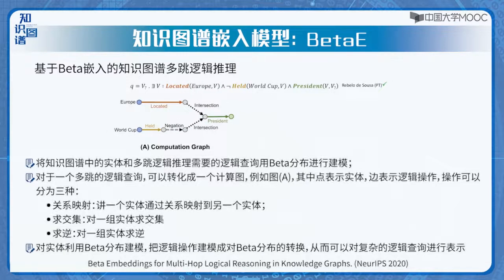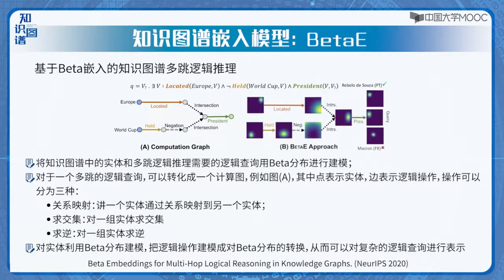BetaE中，逻辑查询的具体操作被建模成在概率嵌入上的向量化操作。如图所示，对于一个问题，列举从未举办过世界杯的欧洲国家的国家主席，其查询逻辑可以表示成一阶逻辑查询，并且可以进一步表达成计算图。其中，点表示具体的实体，边表示逻辑操作。BetaE将计算图中的节点建模为Beta分布，每个边的逻辑操作建模成对Beta分布对应的转换操作。最终，该查询的实体就是和逻辑查询计算出的最终概率分布相近的实体。